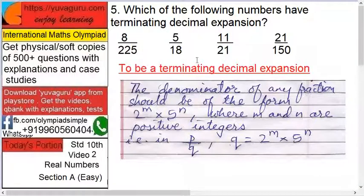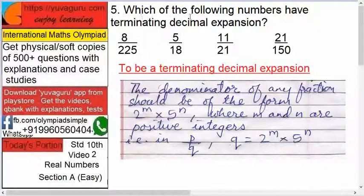Now for any denominator to have a terminating expansion, or any number to have a terminating expansion, the denominator of that fraction should be of the form 2 raised to m times 5 raised to n, where m and n are positive integers. We should be able to define this denominator as 2^m × 5^n. Only then is it a terminating expansion.